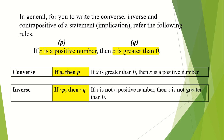Next, inverse. Inverse is actually the negation of an implication. Originally you have if p, then q. As for the inverse, you will have if not p, then not q. In this case, you will have: if x is not a positive number, then x is not greater than zero.